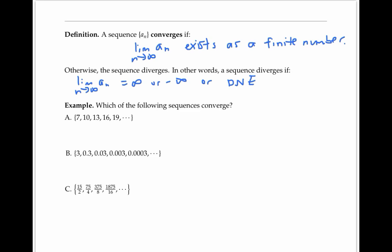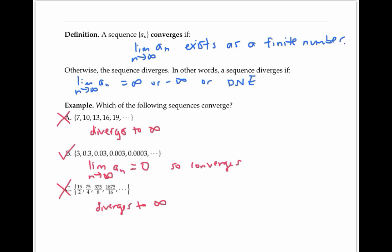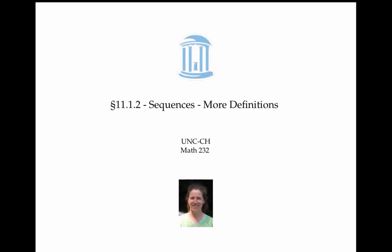Please pause the video and try to decide which of the following sequences converge. Sequences A and C cannot converge because their terms increase without bound — we say that these sequences diverge to infinity. But sequence B does converge, because the limit of its terms is zero. This video gave some definitions for types of sequences, including bounded sequences, monotonic sequences, and convergent sequences.